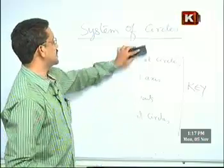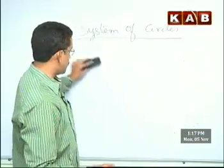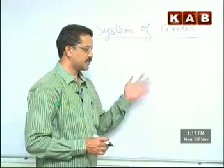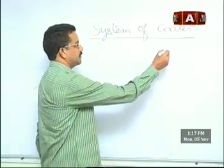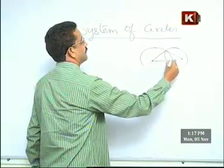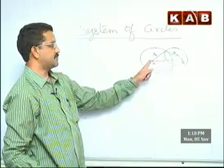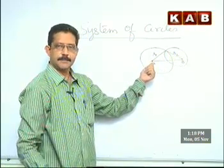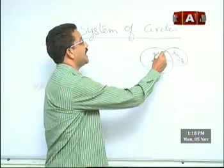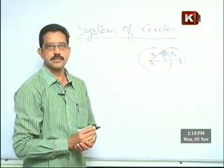Let's take up Orthogonal Circles first. When two circles intersect at an angle of 90 degrees, the first circle has center A and radius R1, the second has center B and radius R2. When the angle between them is 90 degrees, the circles are called orthogonal. The angle between two curves is the angle between their tangents at the point of intersection.